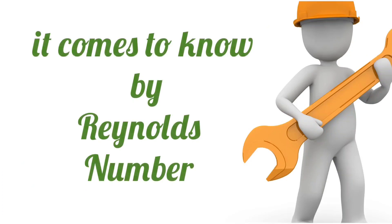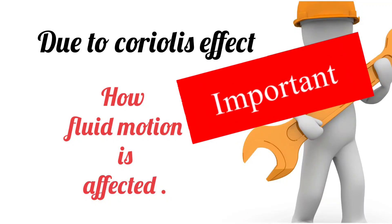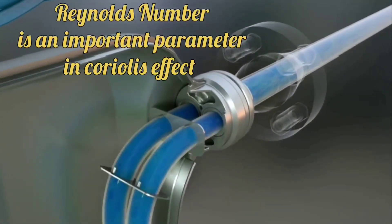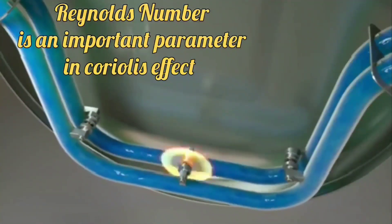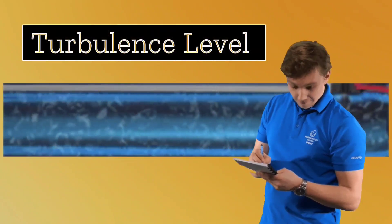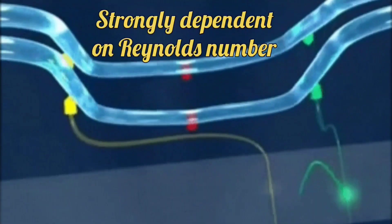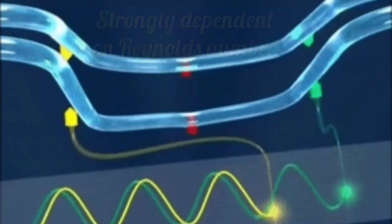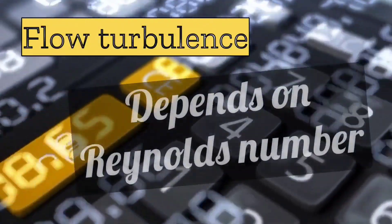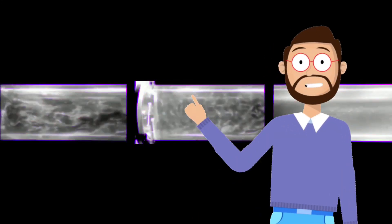From Reynolds number, it comes to know how the motion of the fluid is affected due to the Coriolis effect. Reynolds number is an important parameter in the Coriolis effect, and determines the turbulence level in the fluid. The Coriolis effect affects the motion of a fluid and is strongly dependent on the Reynolds number. The greater the value of Reynolds number, the greater will be the flow turbulence, and at a lower Reynolds number, there will be less flow turbulence.